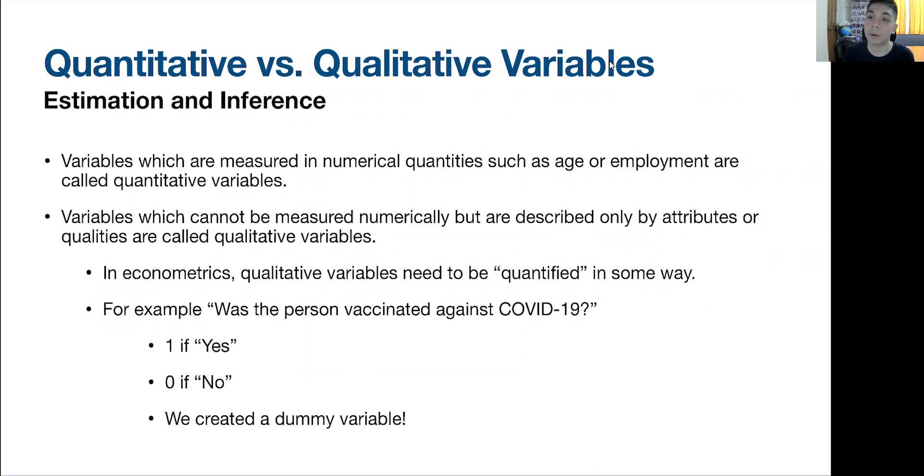Another one is quantitative versus a qualitative variable. Variables that are measured in numerical quantities, like discrete variables, like continuous variables, are quantitative variables. For example, age or wage. The number of cars, the number of jobs you took, the number of years of schooling, those are quantitative variables.